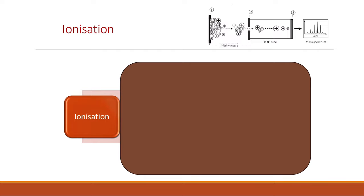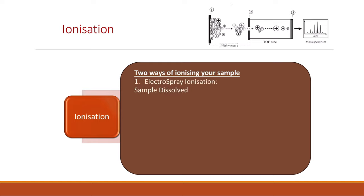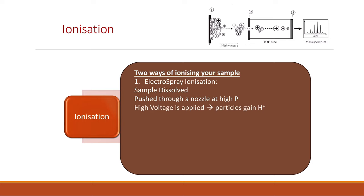There are two ways of ionizing your sample. The first is called electrospray ionization. In electrospray ionization, the sample is dissolved first, then it passes through a nozzle at high pressure, and a high voltage is applied. When the high voltage is applied, the particles gain a hydrogen ion, which means the sample turns into a gas made of positive ions.